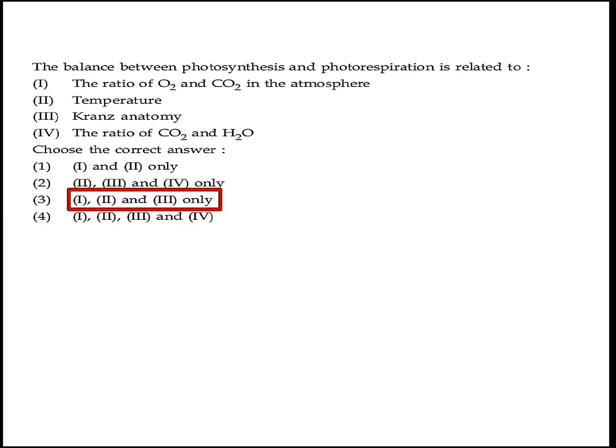The balance between photosynthesis and photorespiration is related to the ratio of O2 and CO2 in the atmosphere, temperature, and Kranz anatomy. Option 3 — 1, 2, and 3 only — is the right answer.